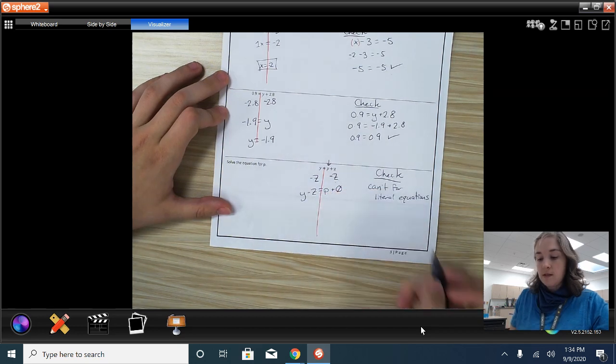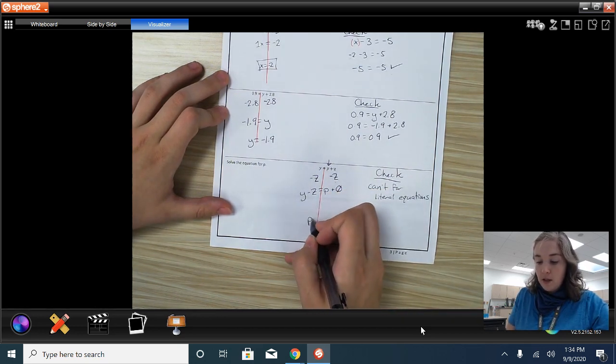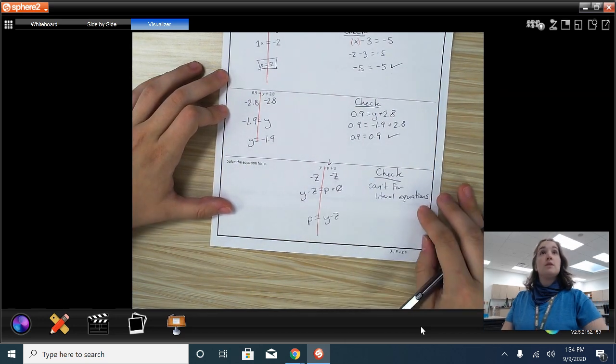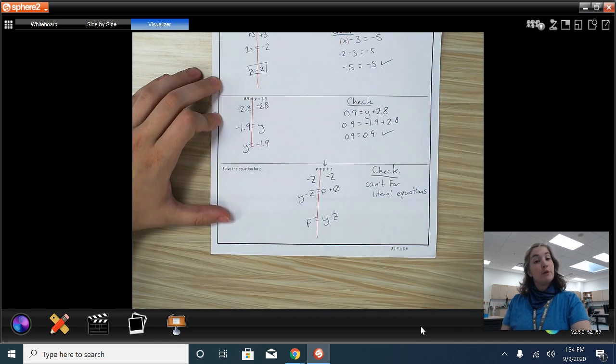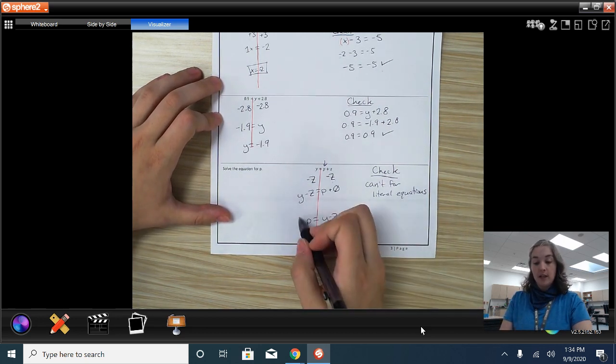So Y minus Z. If you really don't like P being on the right, that's fine. So we can have P equals Y minus Z. Good news is you can't check for a literal equation. So for this literal equation, we're just going to leave it as it is.